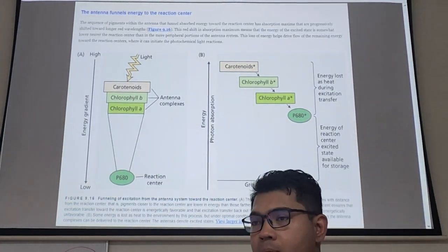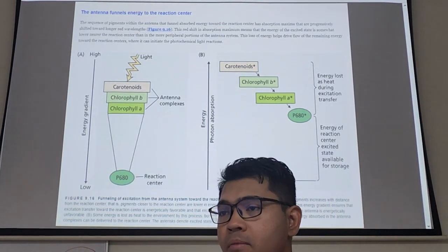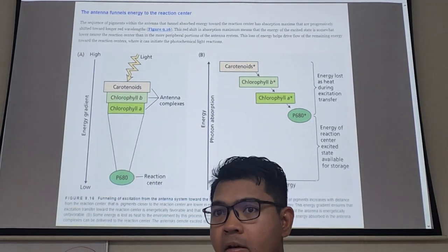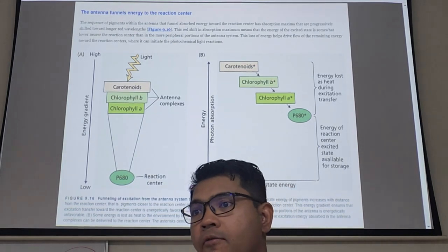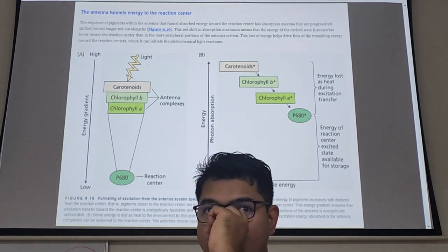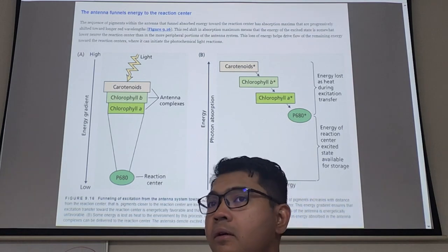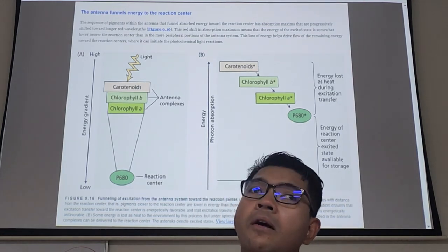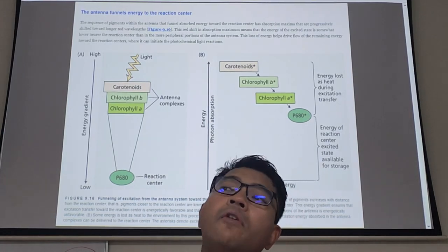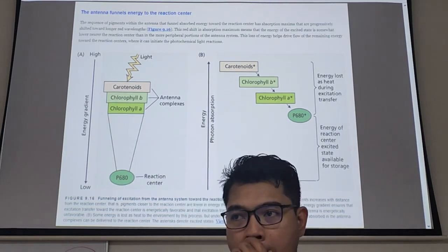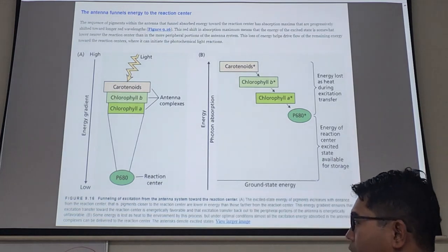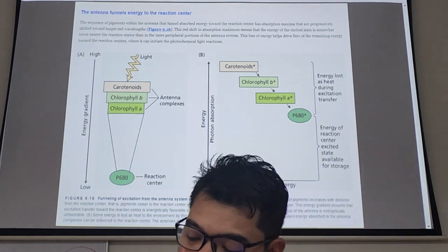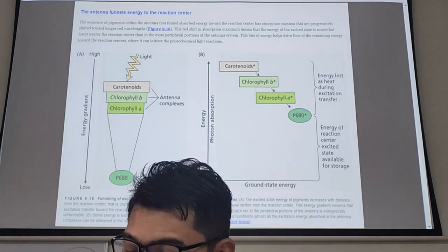Remember this: photosystem 1 and photosystem 2, biochemically, photosystem 2 happened first, then only photosystem 1. The reason that it's not named that way—I don't know why scientists didn't correct this—photosystem 1 happened to be found first, then later on, they found out, oh, by the way, energy comes from this guy first. Yeah, so photosystem 2, it's number 2, but sequence, it is number 1.